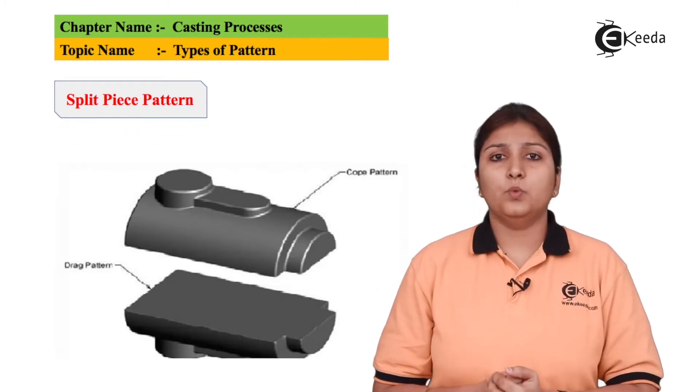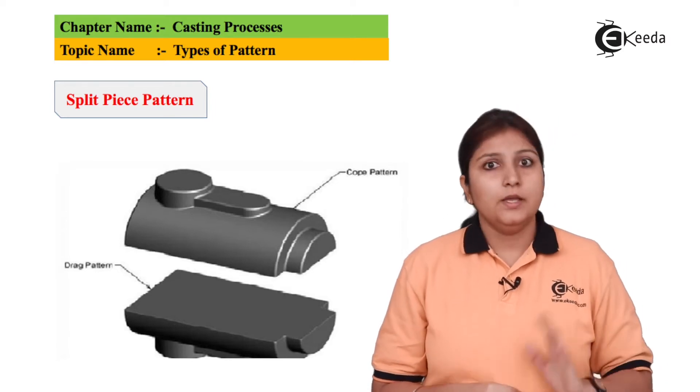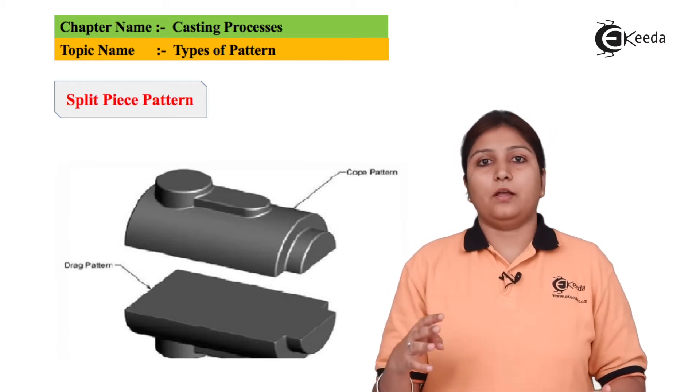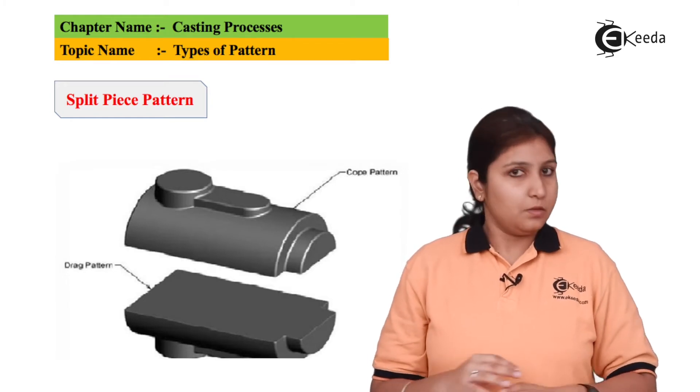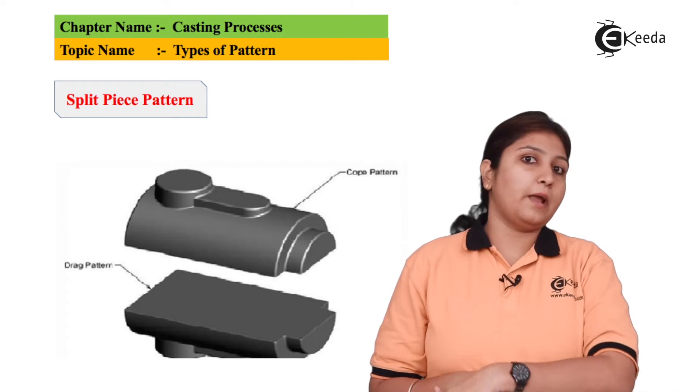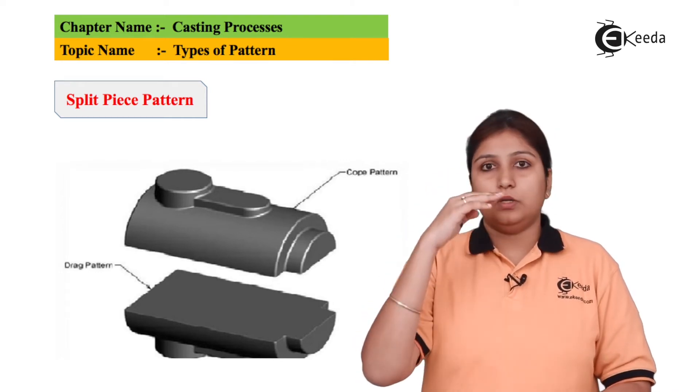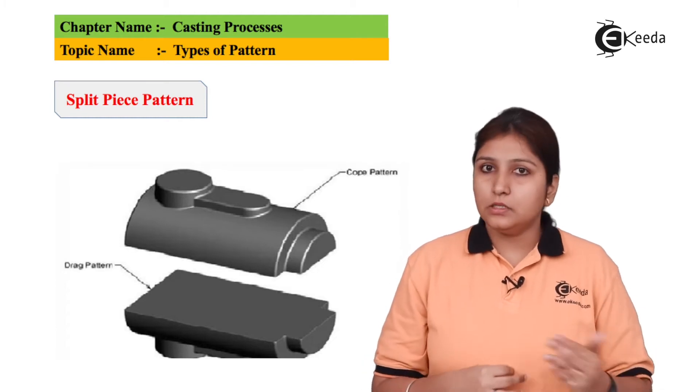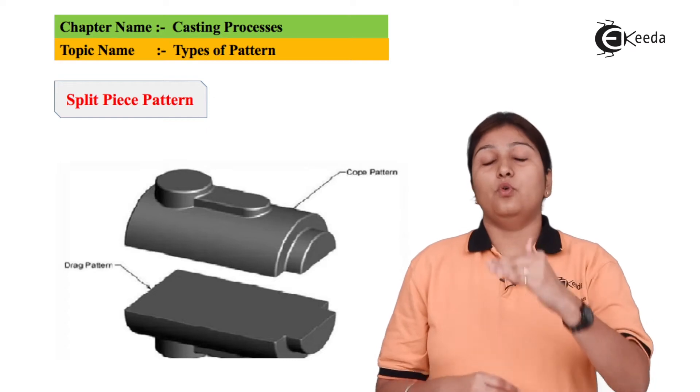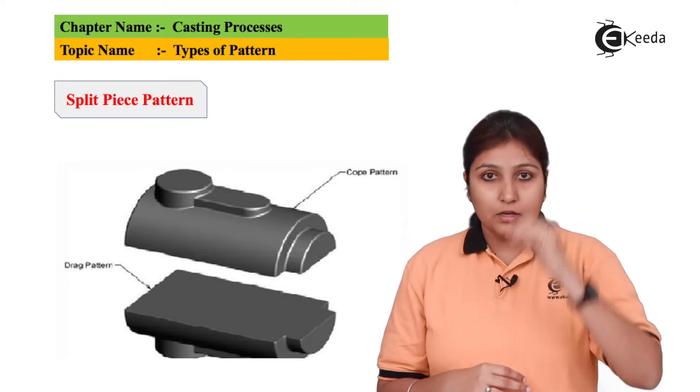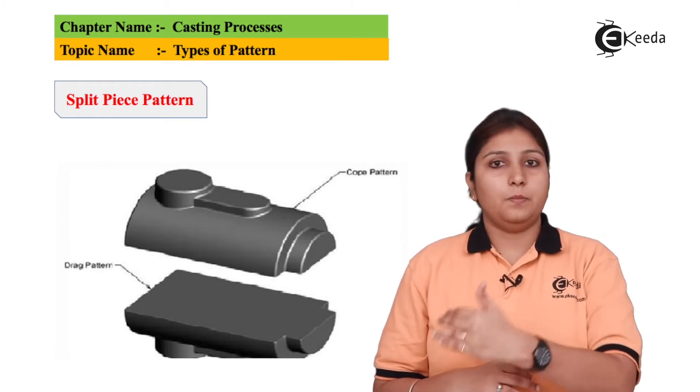So now this is the second pattern which is split pattern. So in split pattern what happens is it is not a single piece. It consists of a cope and a drag. Cope and drag are two basic parts of a pattern. So where the single piece is not used, cope and drag pattern is used. The basic down part is known as drag, upper one is known as cope and same, the arrangement is same, gating system is used. But it is not a single piece, it consists of a cope and a drag and it has to keep together, material has to be poured and it gets filled and the pattern is made.